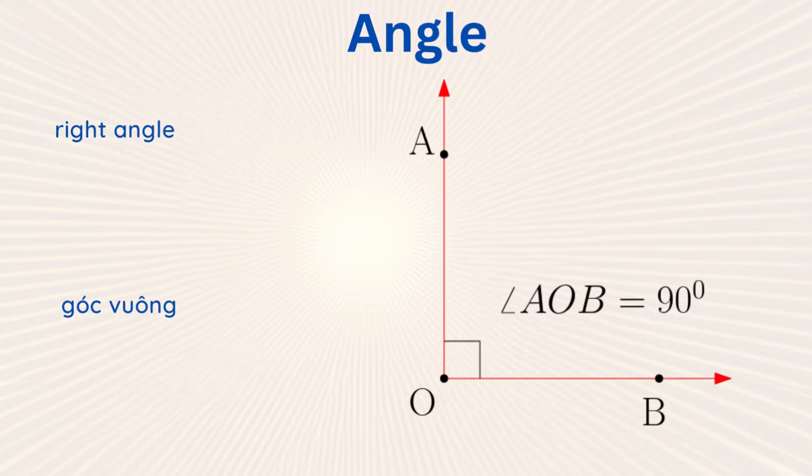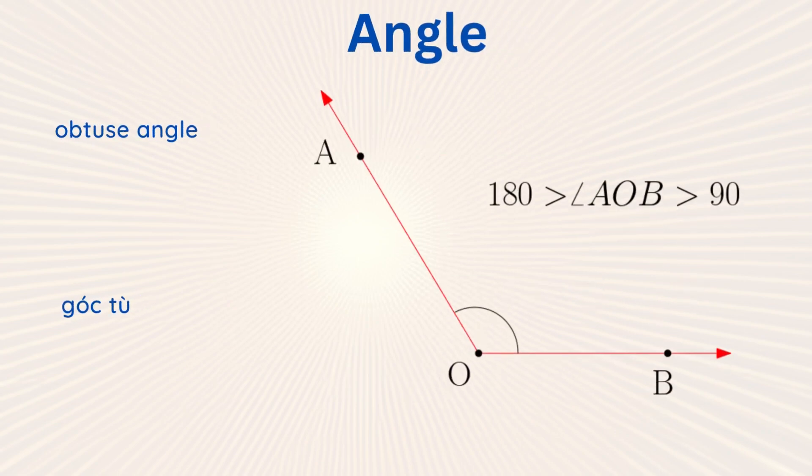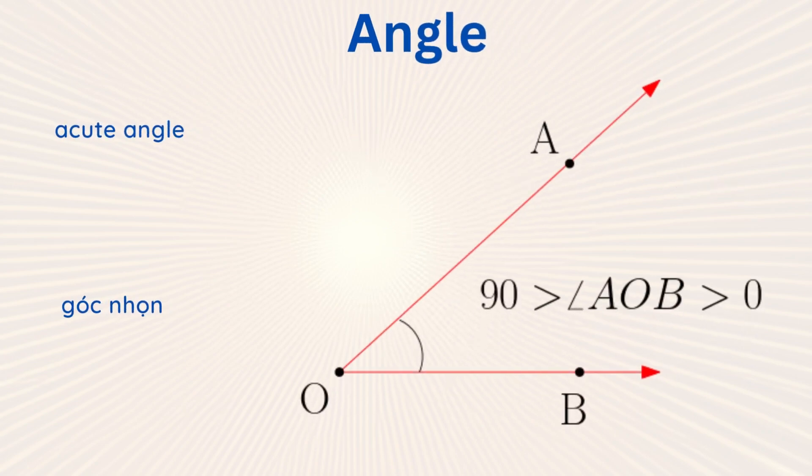A right angle equals 90 degrees. An obtuse angle is greater than 90 degrees and smaller than 180 degrees. An acute angle is positive and less than 90 degrees.